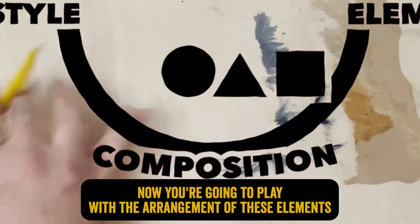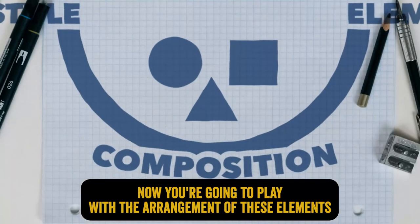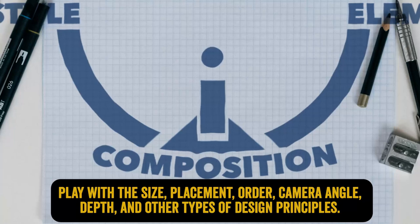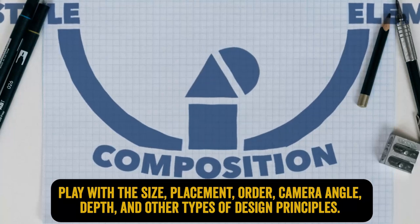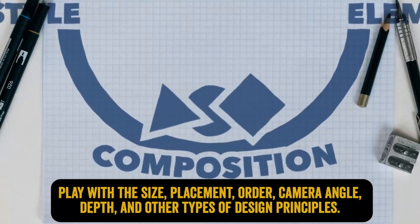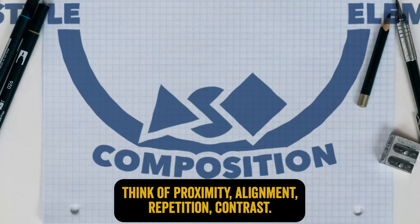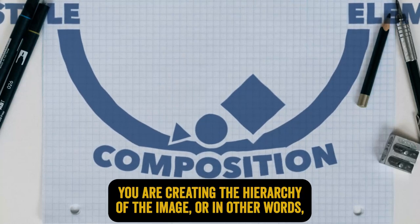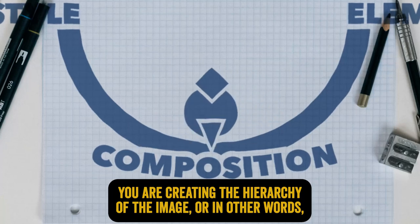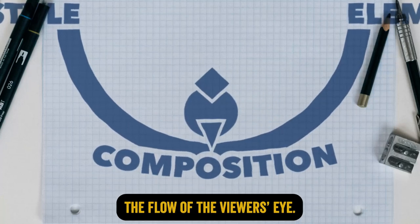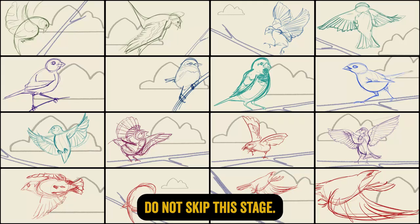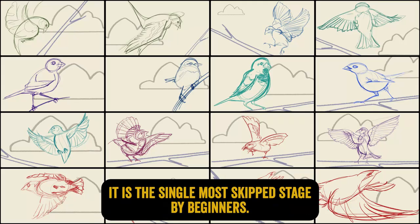Now you're going to play with the arrangement of these elements in your compositional sketches. Play with the size, placement, order, camera angle, depth, and other design principles — think proximity, alignment, repetition, contrast. You are creating the hierarchy of the image, or in other words, the flow of the viewer's eye. Do not skip this stage. Nail the composition in the thumbnails. It is the single most skipped stage by beginners.